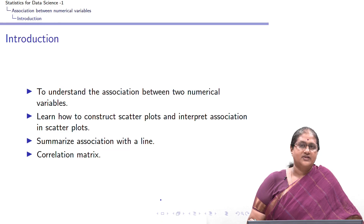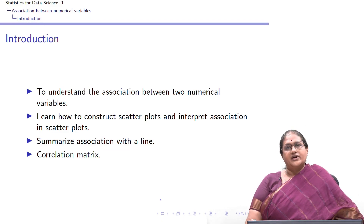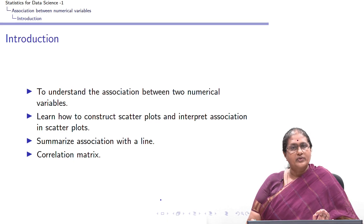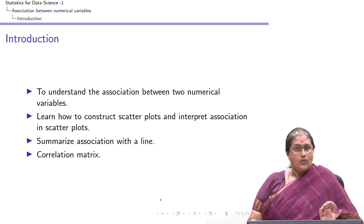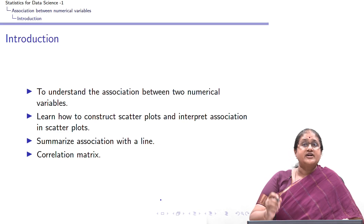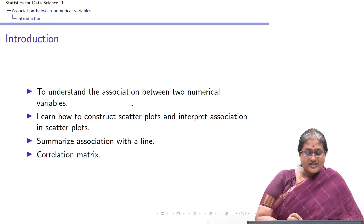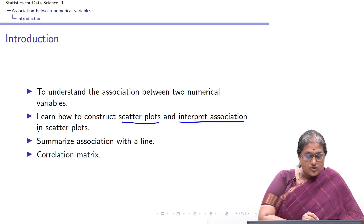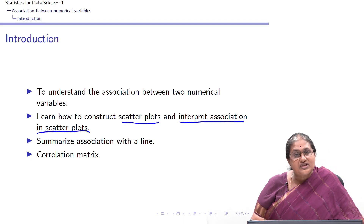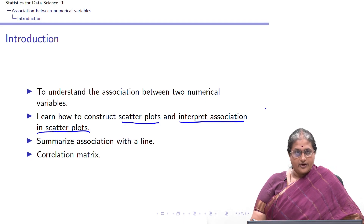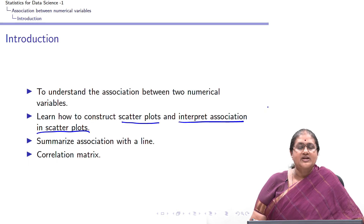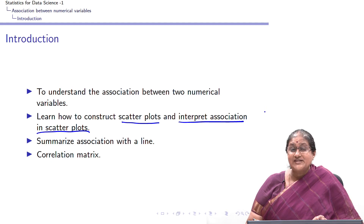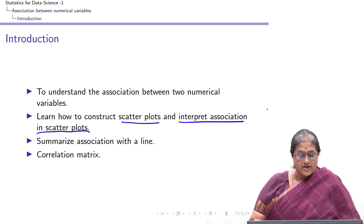In the next part of this lecture, we are going to understand how we describe the association between two numerical variables. We will first introduce what a scatter plot is and then try to interpret the association between the two variables using the scatter plot. Recall, we interpreted the association between two categorical variables using the notion of a contingency table, and here we are going to use the notion of a scatter plot.